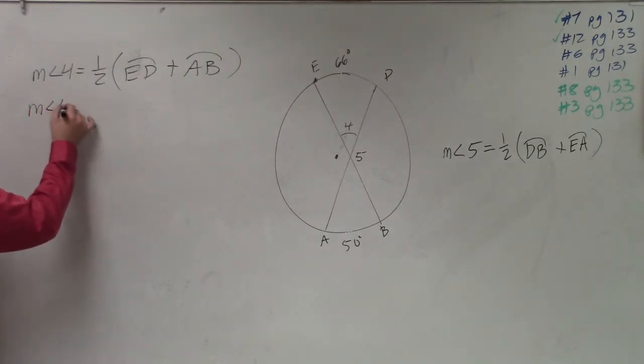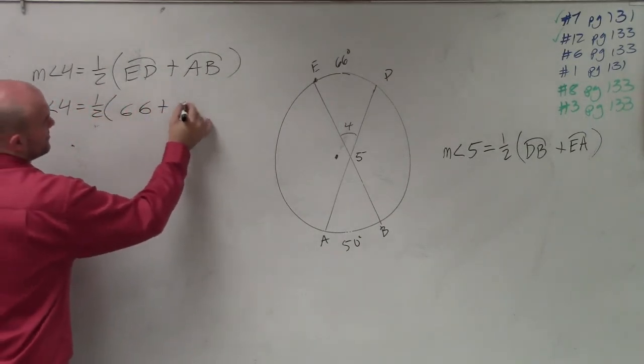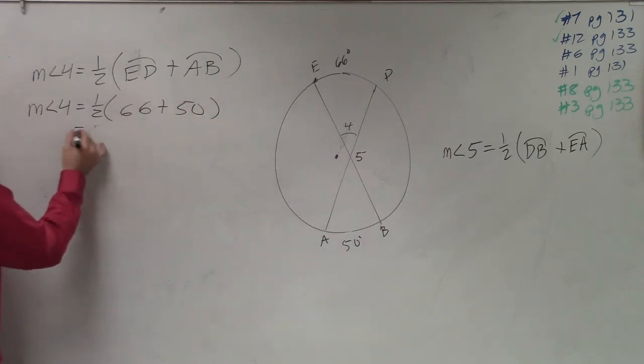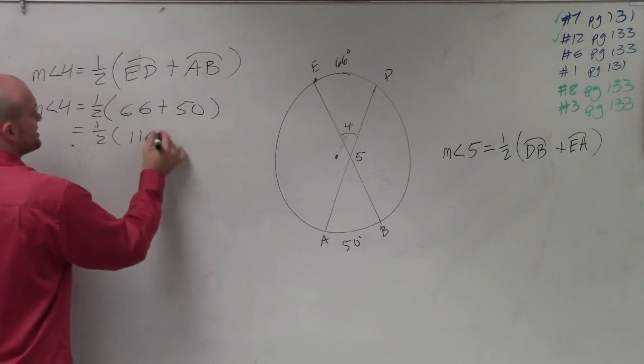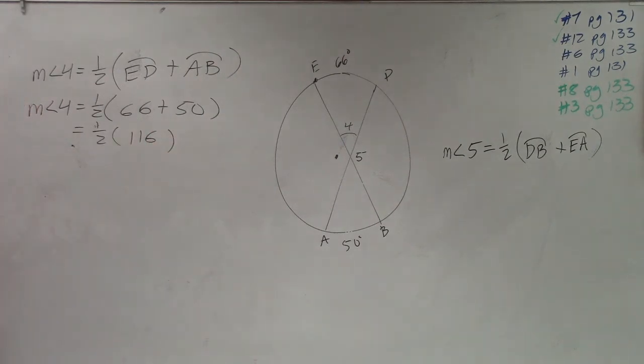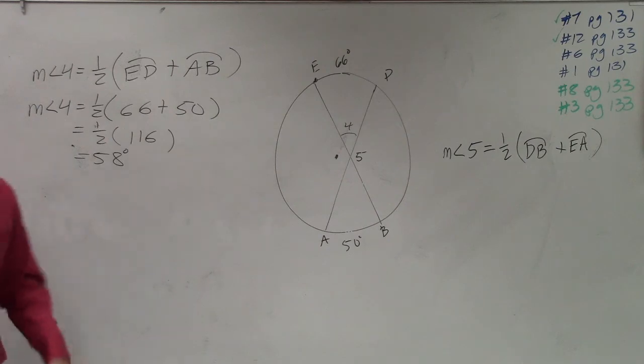So measure of angle four equals 1 half 66 plus 50. So that's going to be 116. Take 1 half of that is going to be 58. Everybody agree with me on that?